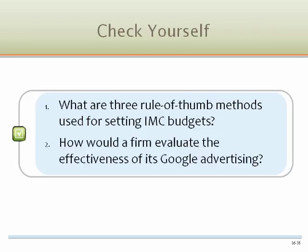Check yourself. 1. What are three rule-of-thumb methods used for setting IMC budgets? Competitive parity, percentage of sales, and affordable budgeting. 2. How would a firm evaluate the effectiveness of its Google advertising? Return on investment, or ROI.